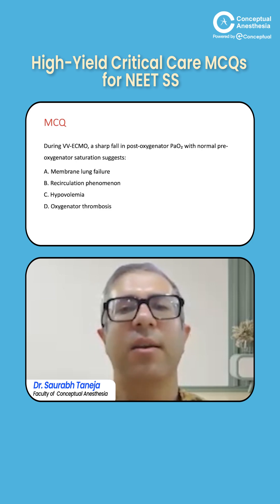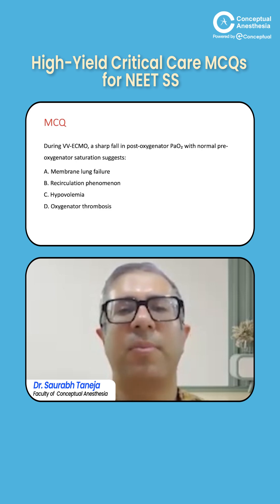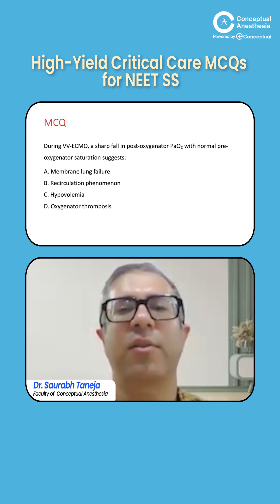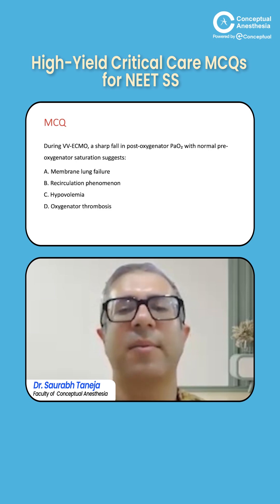So what happens? The blood which is deoxygenated is coming from our body. It goes to the pump, then to the oxygenator. So until this point the blood is deoxygenated. Then the oxygenator improves oxygenation and removes carbon dioxide, and then the blood is pushed forwards. So when we talk about normal pre-oxygenator saturation, that means whatever it was in the patient, it remains the same.